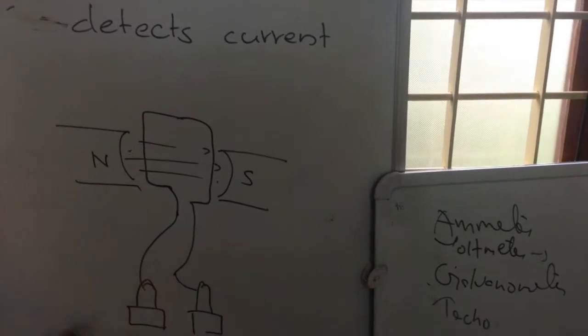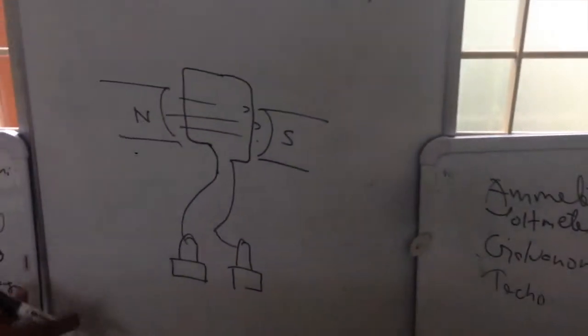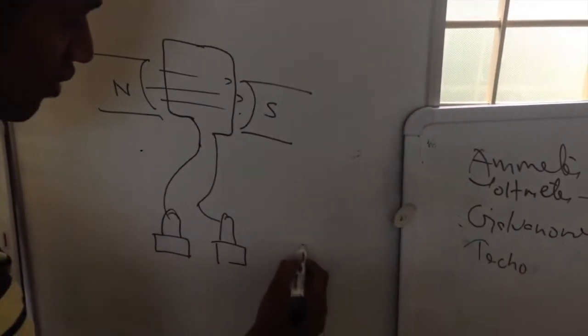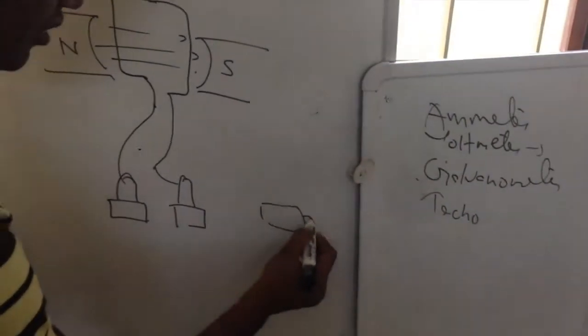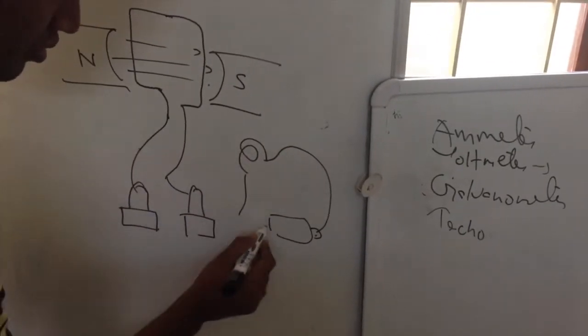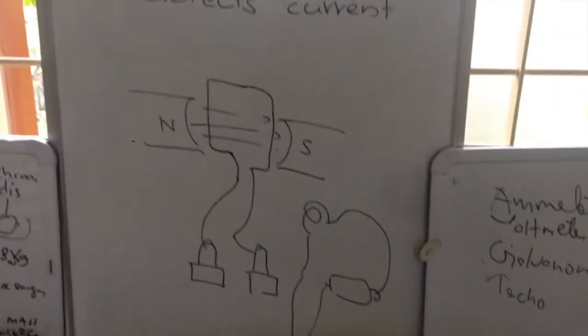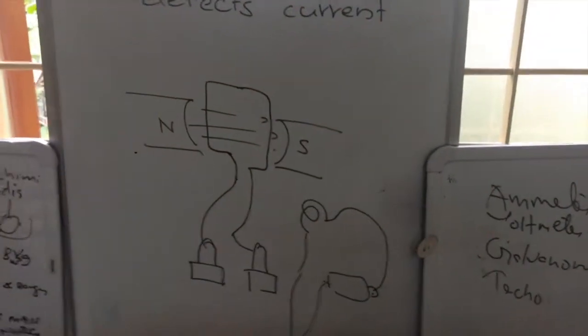These are the two portions to which we are connecting the outer external circuit. Suppose we have a circuit like this. This is a battery, then here there is a bulb, something like this. And we want to find whether current is present in this circuit or not.